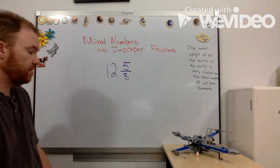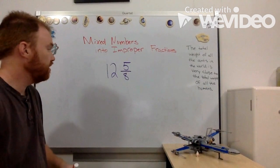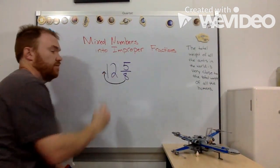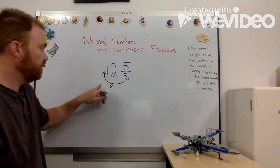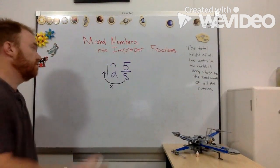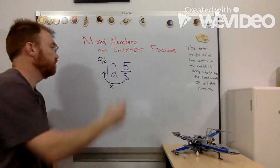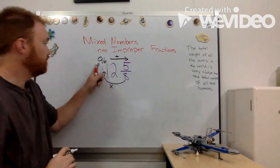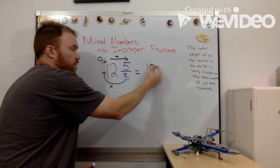12 and five eighths. So what I'm going to do is I'm going to take my denominator and multiply it by the whole number. Eight times 12 gives me 96. Then I add 5. 96 plus 5 gives me 101.